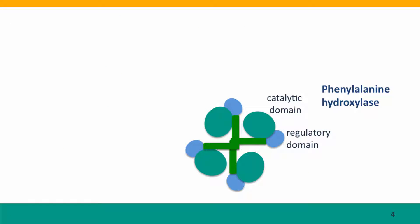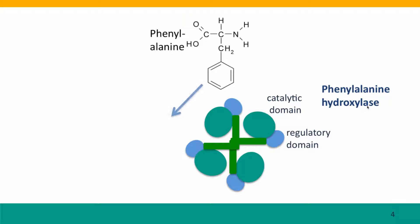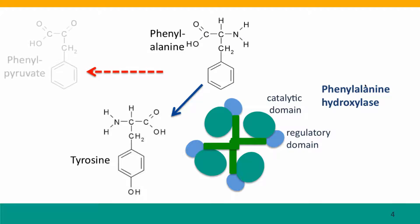Here's another example of regulation. This is phenylalanine hydroxylase, which we talked about a few lectures ago as an example of a catalytic protein. Phenylalanine hydroxylase acts on phenylalanine, the amino acid, breaking it down to tyrosine.